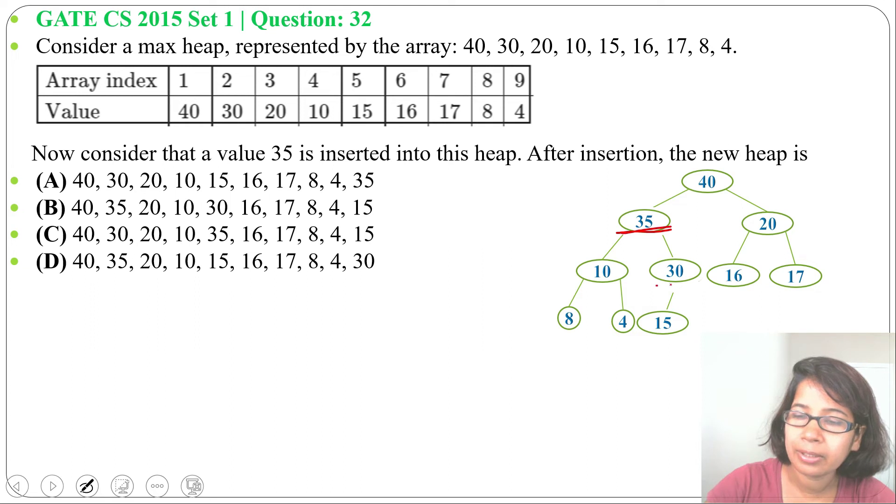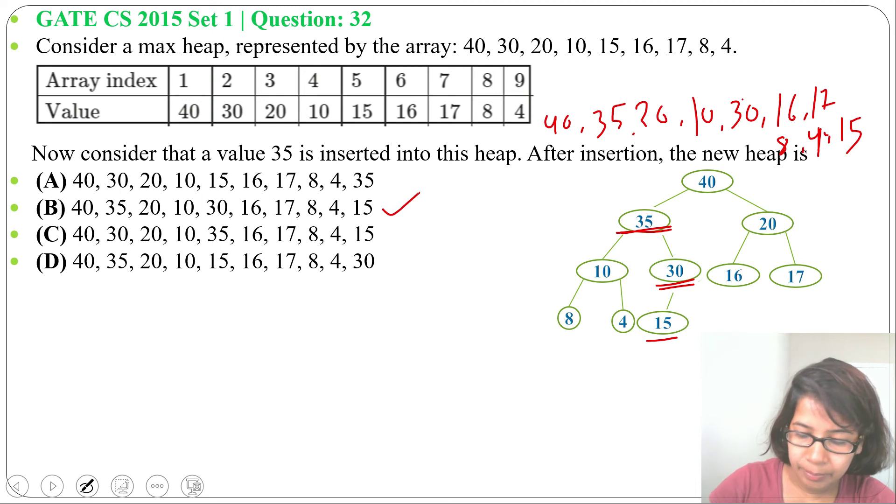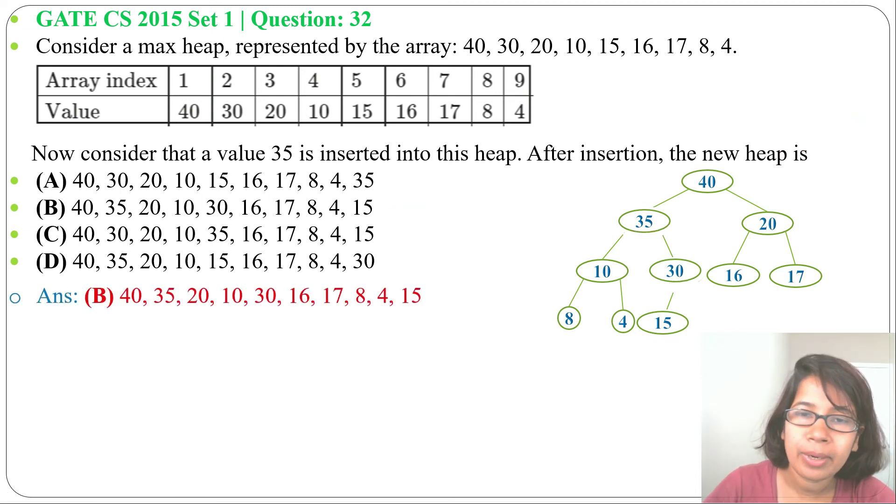Now 35 is greater than 30, and 30 is greater than 15, so this is a max heap. Now write it in level order: it will be 40, 35, 20, then 10, 30, 16, 17, 8, 4, and 15. It's present in option B.